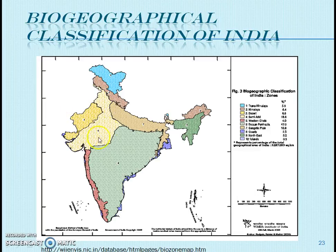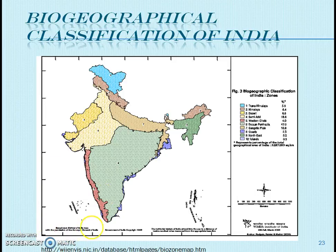The fifth region is the Western Ghats, situated from where the Tapi River originates in Gujarat state up to Kanyakumari. The sixth region is the Deccan Plateau, which is the largest biogeographical region of India, covering almost 43% of the land mass and having high biodiversity.